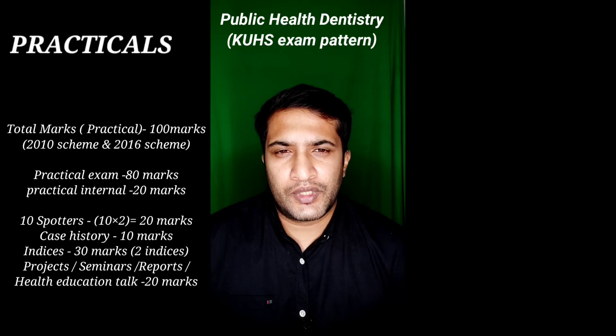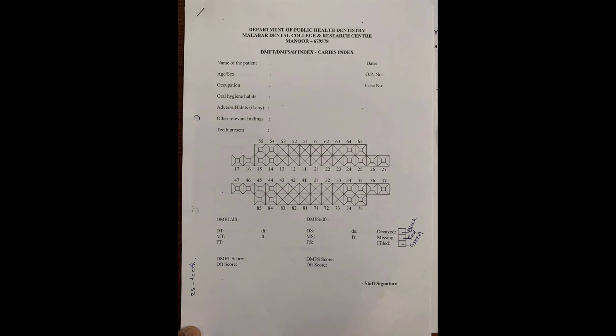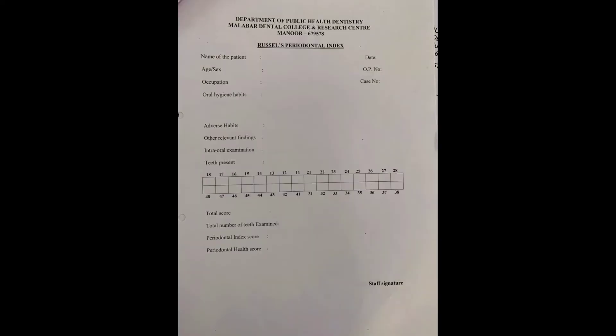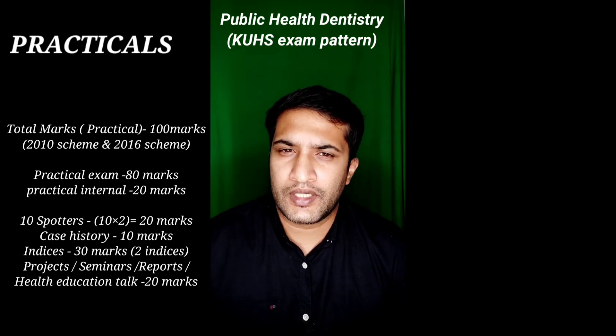You need to write a treatment plan as per your diagnosis, based on primary, secondary, and tertiary levels. You also have to take two indices — any index can be asked. The most commonly asked one is the Oral Hygiene Index, where you check the debris index and calculus index, typically the OHI-Simplified (OHIS), checking only six teeth for both debris and calculus. You may also be asked DMFT or DMFS — checking decay, missing, and filled status — or Russell's Periodontal Index, where the periodontal condition is checked using criteria 0, 1, 2, 4, 6, and 8. Mostly it will be OHIS and DMFS or DMFT.